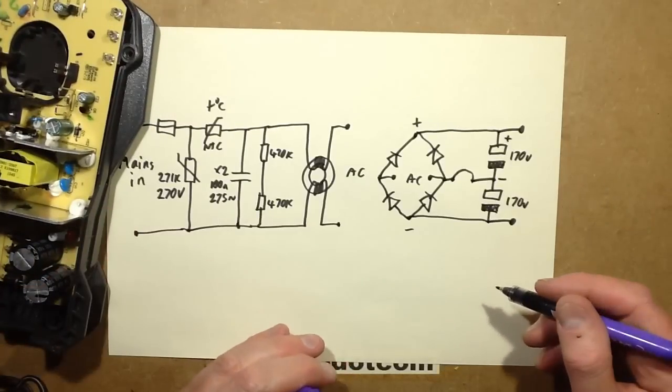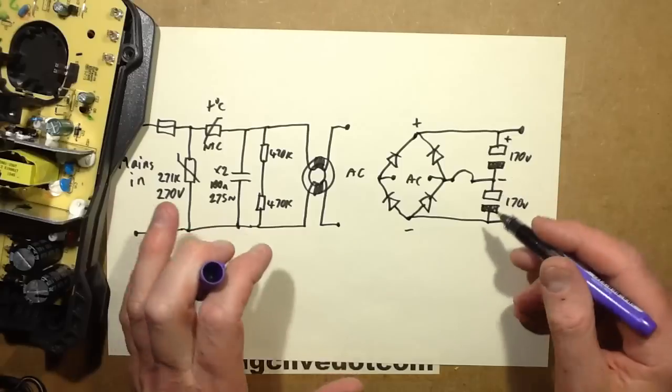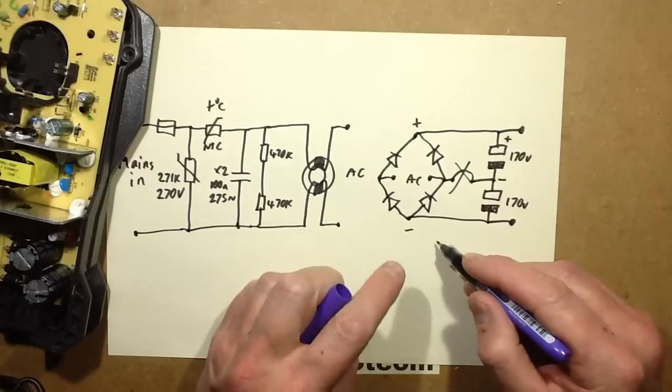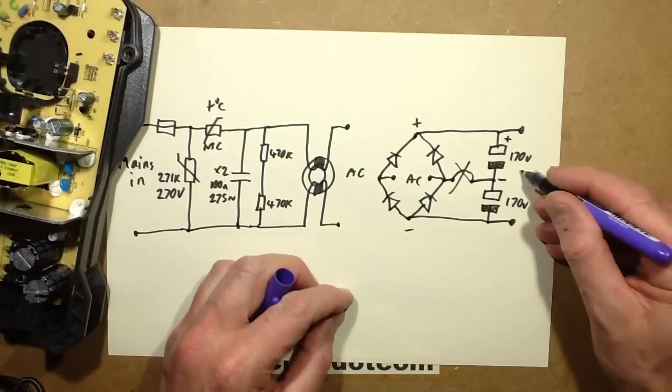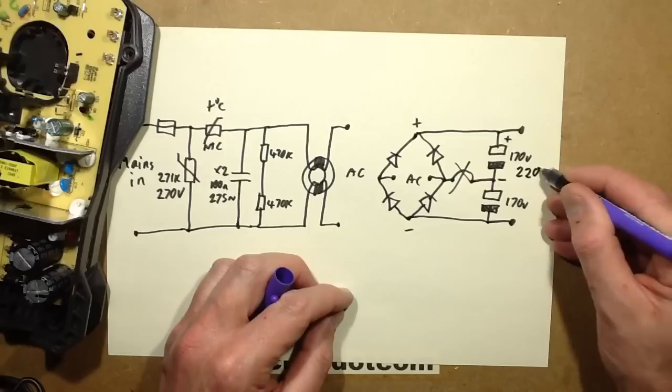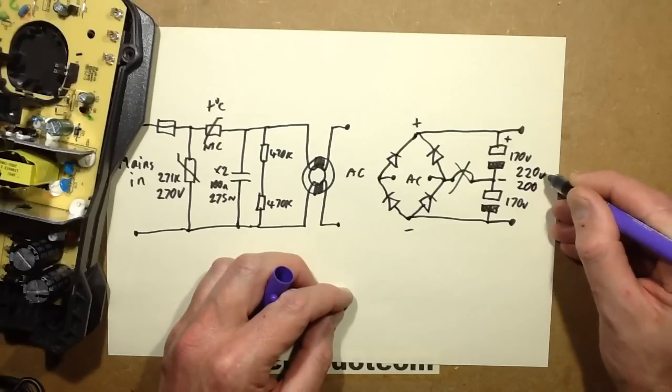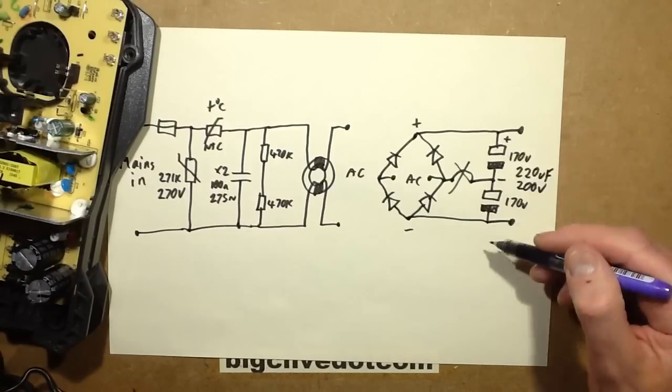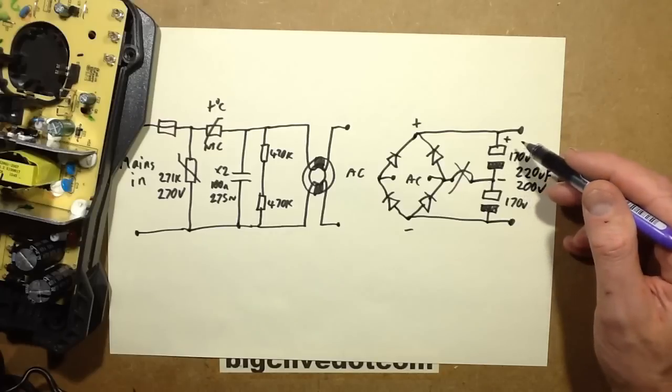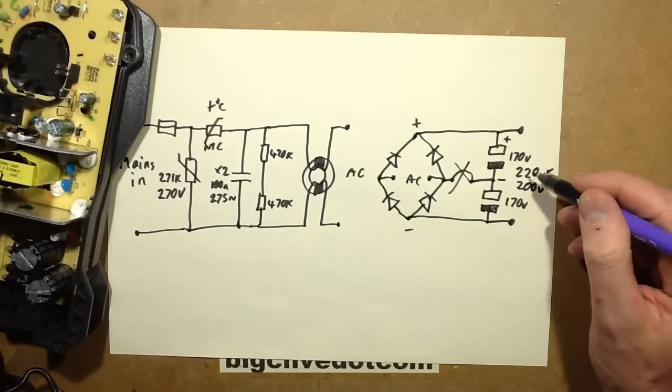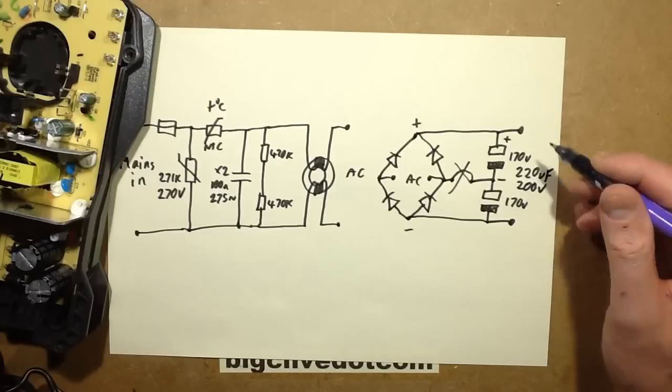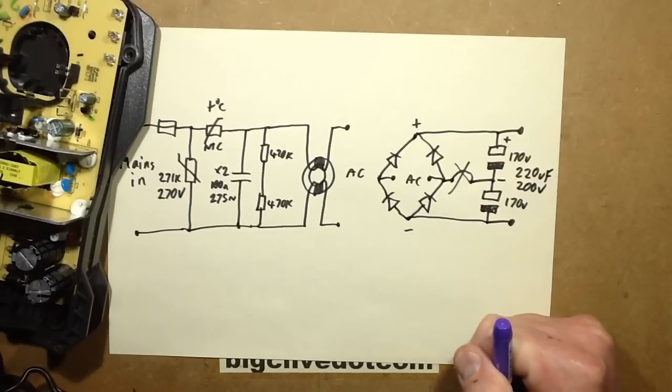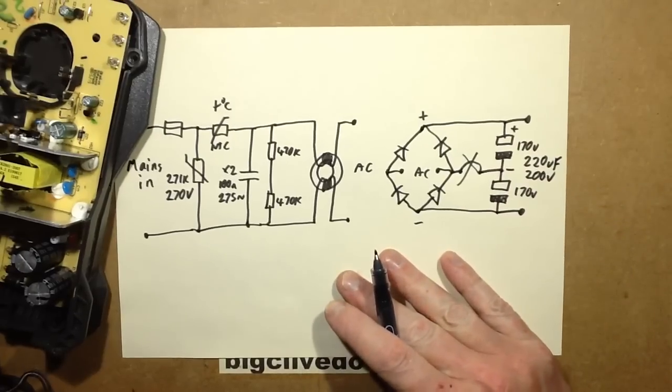But it's actually in the case of beefy switchmode power supplies, it's easier and more efficient to actually design them for a fixed voltage. So what they've done is they've designed this for around about the 350 volt level. Now technically speaking all you'd need to do to convert this to 240 volt operation is remove that link, because then this full bridge rectifier kicks in and these two diodes in series, they're rated 220 microfarad at 200 volts each. That adds up with the two of them in series, it means that they're rated about 400 volts but at about 110 microfarad total.